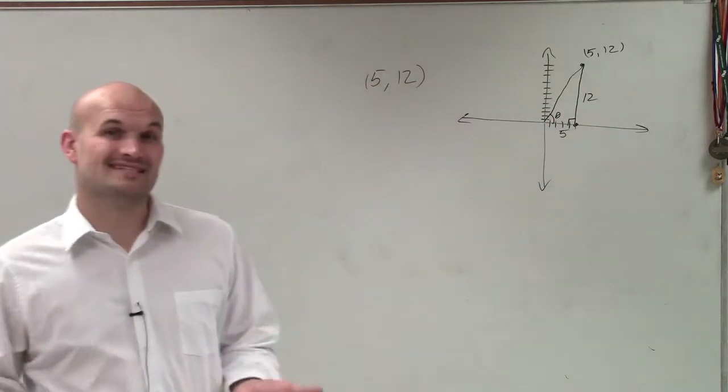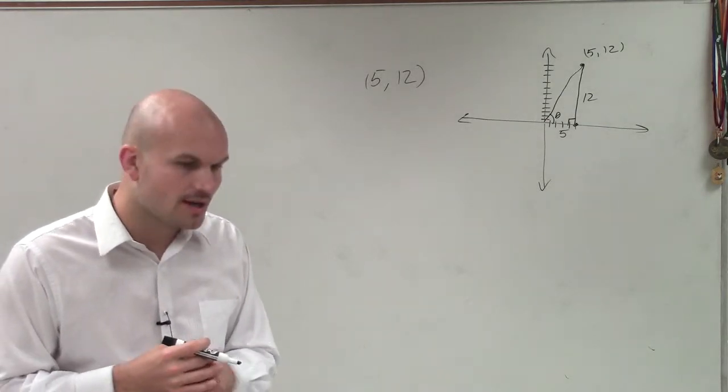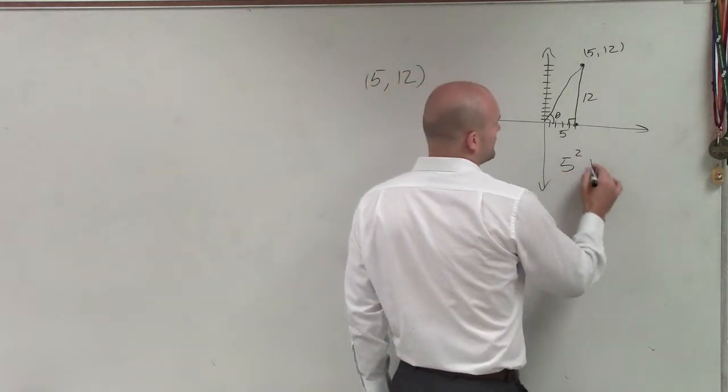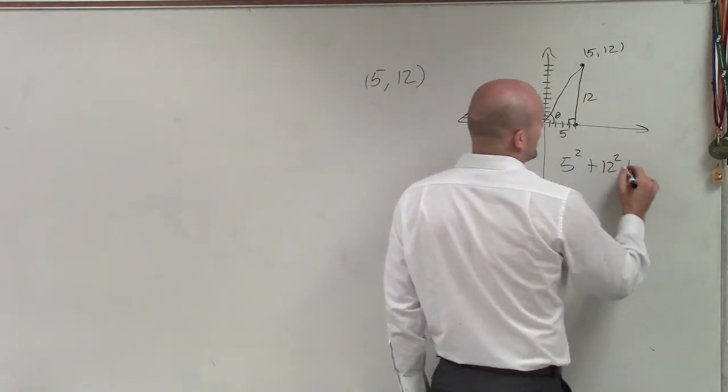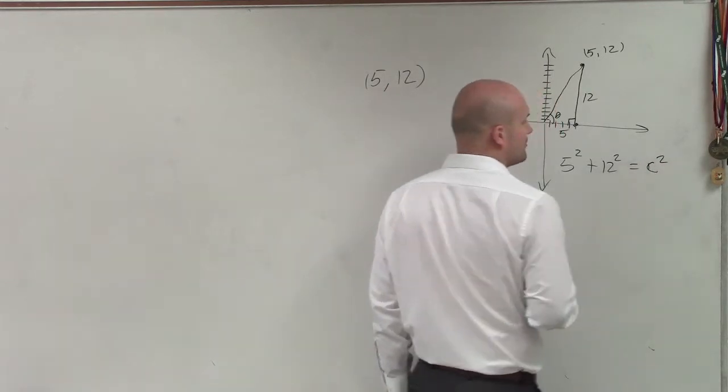Now, again, to evaluate for sine, cosine, and tangent, we know that we have to go ahead and know the length of the hypotenuse. So we can use Pythagorean theorem, or if you understand that this is a Pythagorean triple, you can see that the answer is always going to be 13.